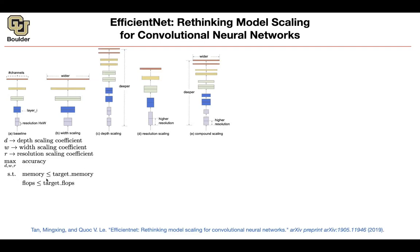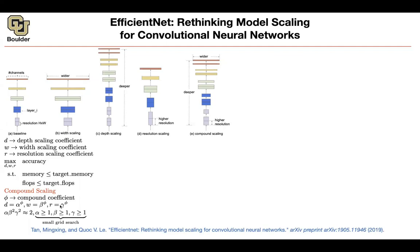Our memory should be less than or equal to the target memory, and we have a budget for floating point operations depending on the target device. The idea is to maximize accuracy subject to these two constraints while changing D, W, and R. The paper introduces a compound scaling coefficient phi. Alpha, beta, and gamma are four parameters you can find by grid search by training on a smaller dataset with a smaller network. If you want to make your network larger, you just change phi, and D, W, and R will change accordingly.